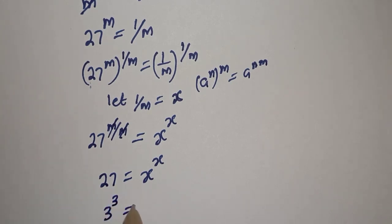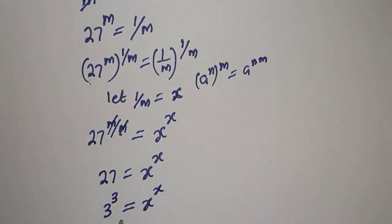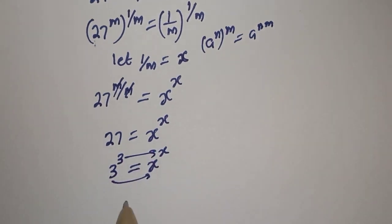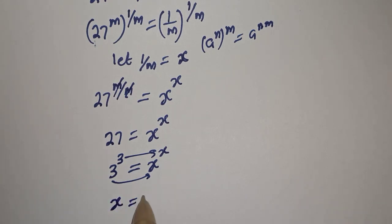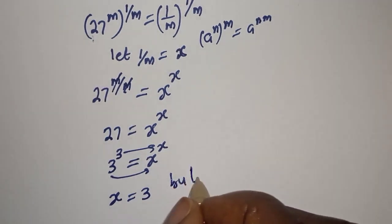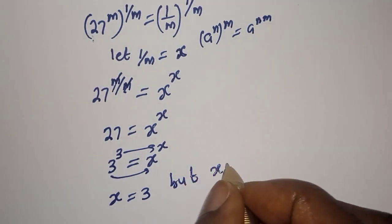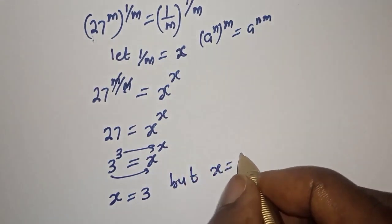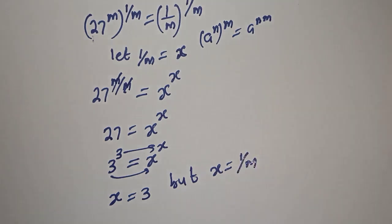Since 27 is 3 raised to power 3, we have 3³ equal to s raised to power x. From here the base equals s and the exponent equals s, therefore s is equal to 3.